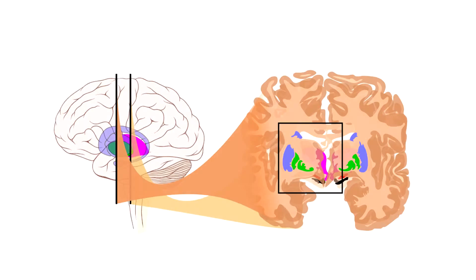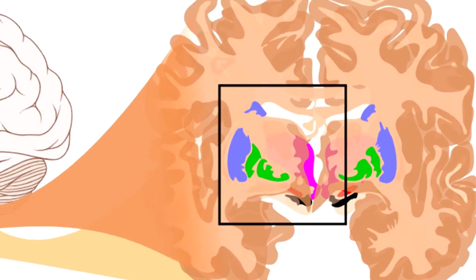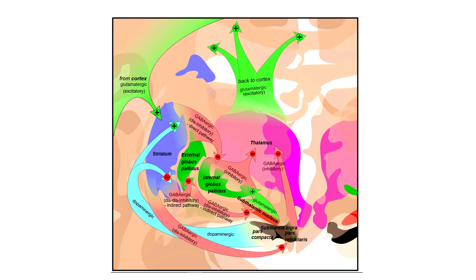Some important neurotransmitters of the basal ganglia are GABA, which works inhibitory; glutamate, which works excitatory; and dopamine, which works inhibitory via D2 receptors and excitatory via D1 receptors.